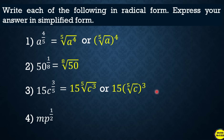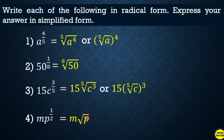Another example: mp raised to one half. Similar to the previous example, m is separate. We only rewrite p raised to one half into radical form. Since the denominator is 2, the index is 2 and is not written — it's understood. Therefore the answer is m times the square root of p.